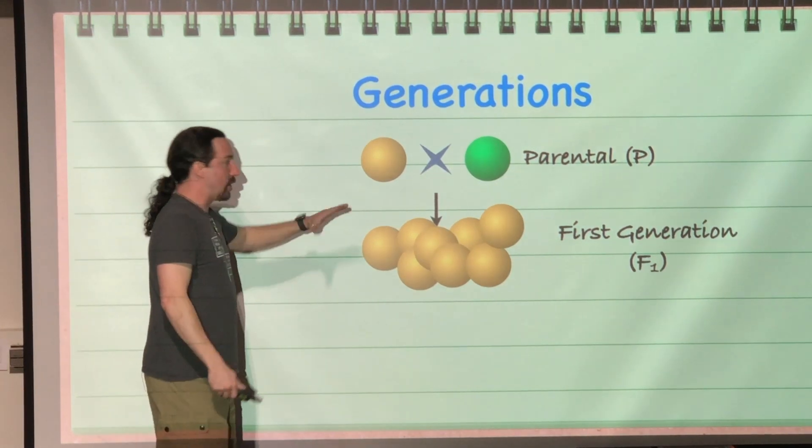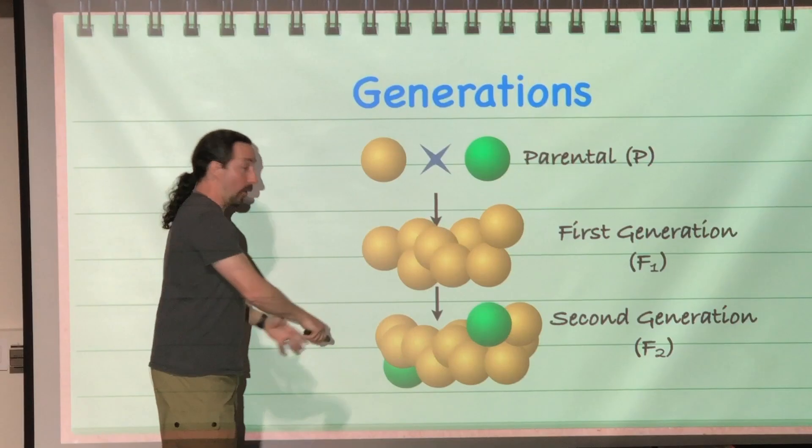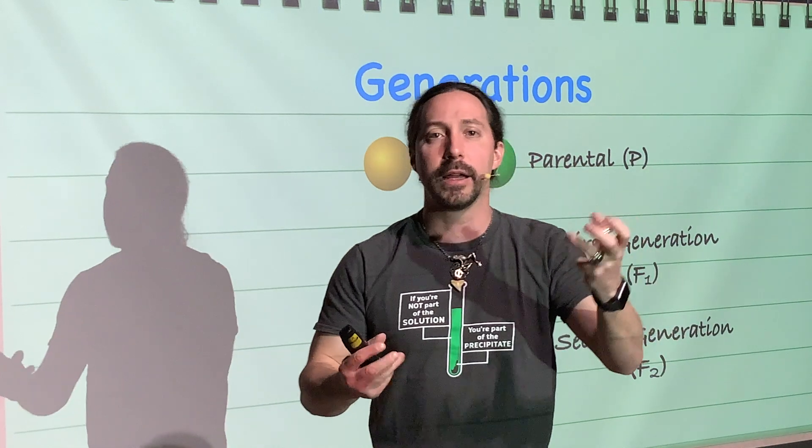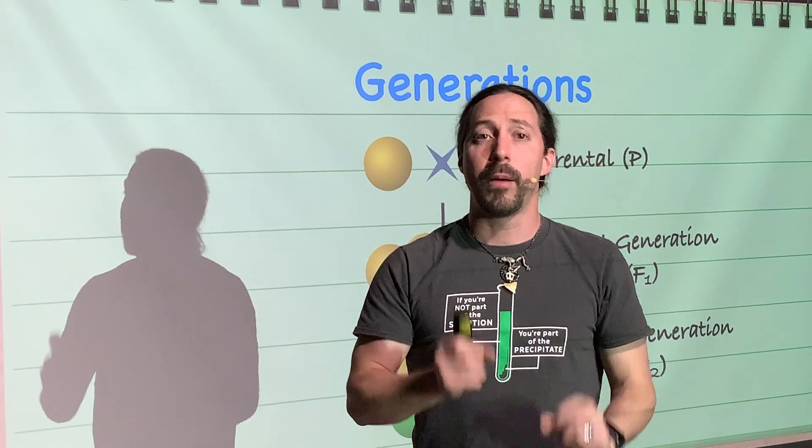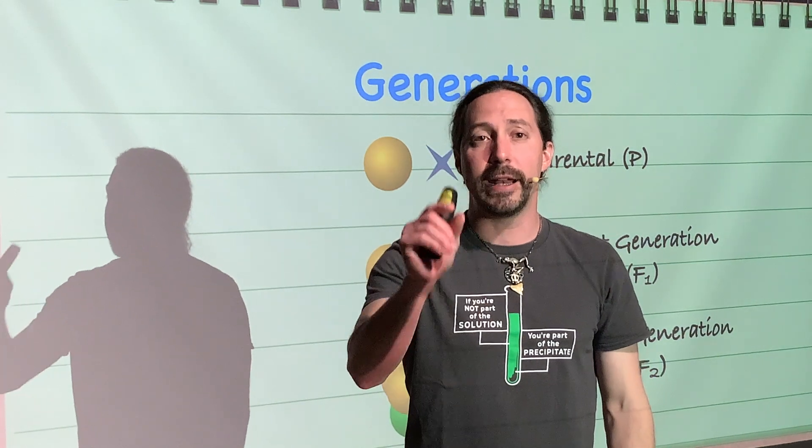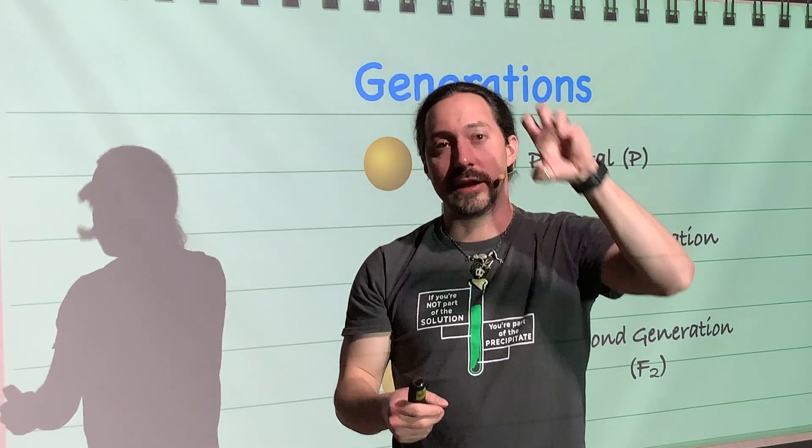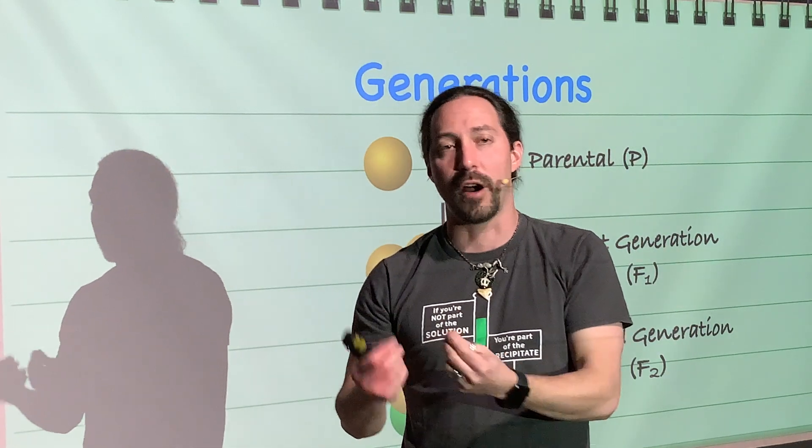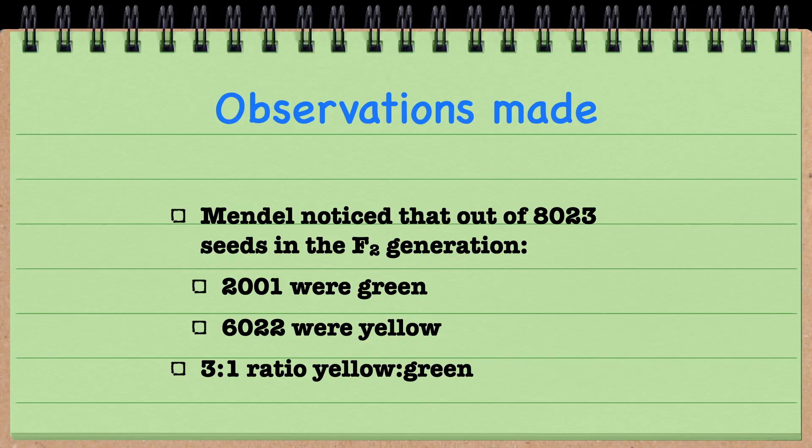Then he crossed the F1 generation with itself and looked at the F2 generation, where there were a lot of yellow peas, but the green peas came back. All of a sudden, he had green peas again. He didn't have a lot of them, but they appeared in the next generation. Even though he only mated yellow peas with each other, he ended up with some green peas in his offspring, which led him to recognize some things about his peas.